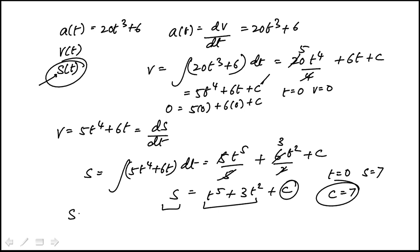So our displacement function is t to the 5 plus 3t square plus 7. And if we look at the answer choices, that matches with d.